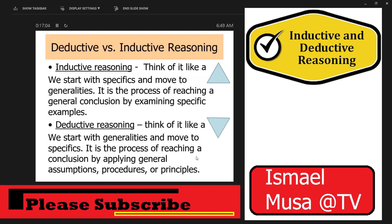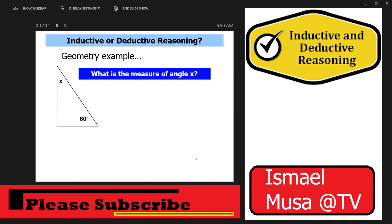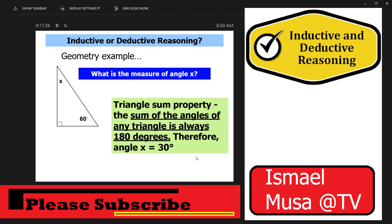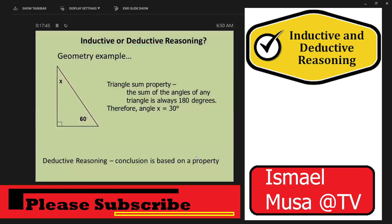Let's identify whether each example is inductive or deductive. In geometry, given a triangle, what is the measure of angle X? The answer is deductive, because we apply the triangle sum property — the sum of the angles of any triangle is always 180 degrees — and therefore angle X is 30 degrees. A conclusion based on a property is deductive reasoning.